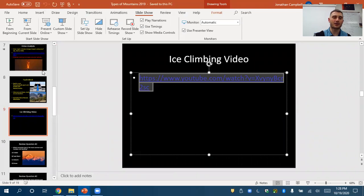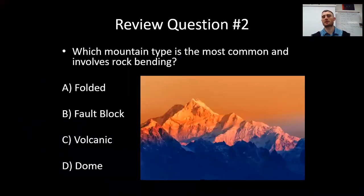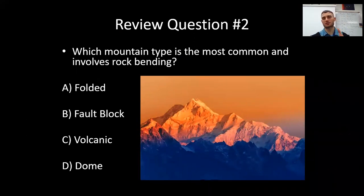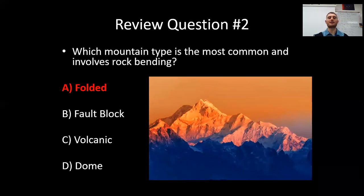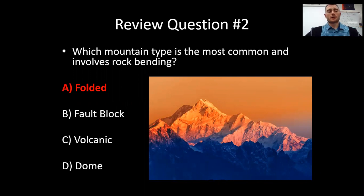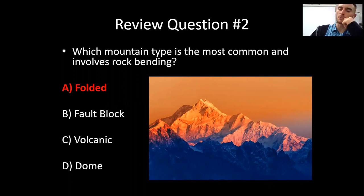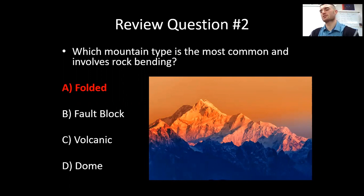To end the day, let's do our question: which mountain type is the most common and involves rock bending? Is it A, folded; B, fault block; C, volcanic; or D, dome? The answer is A — folded mountains. We'll get through the rest of mountains tomorrow. Hope everyone's doing well. We'll have our writing assignment and last unit quiz of the quarter posted very soon. Make sure to get your notebook check and vocab finished. This is Mr. Campbell — if you have any questions, I'll get to them on Canvas. Mr. Campbell, signing out.